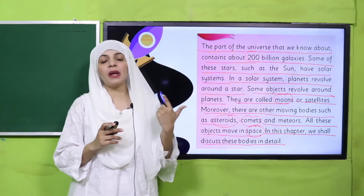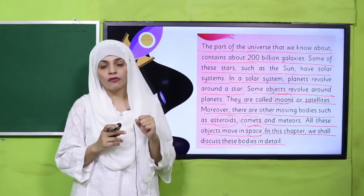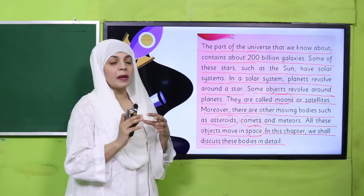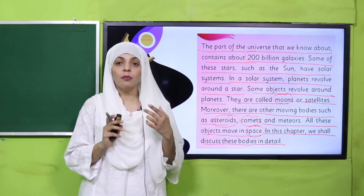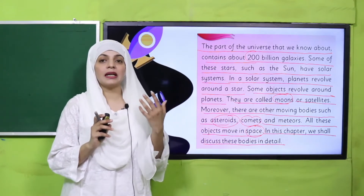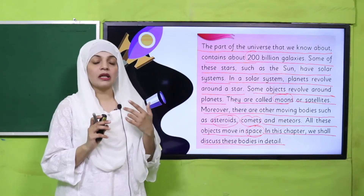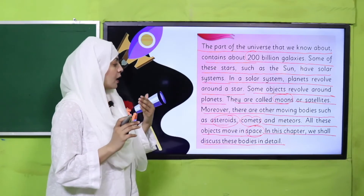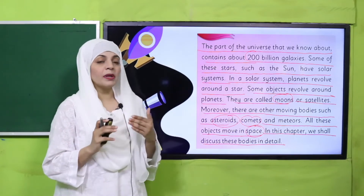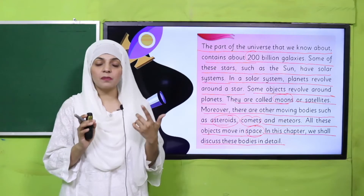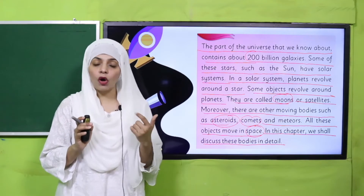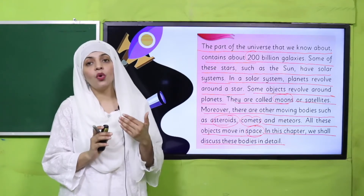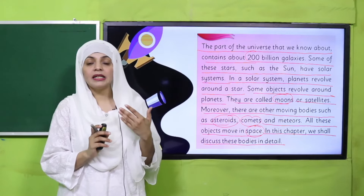Tamam jo planets hain, wo uske irgird revolve karti hain. Iske ilawa space mein planets ke irgird moons ya satellites jinko kaha jata hai, wo bhi revolve karti hain. Iske ilawa asteroids, comets, aur meteors jaisi cheezein bhi space mein revolve karti hain. Is chapter mein hum in tamam cheezon ko in detail discuss karenge.